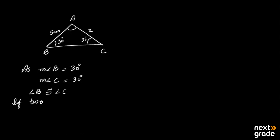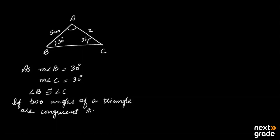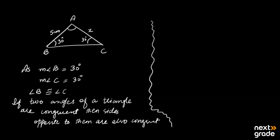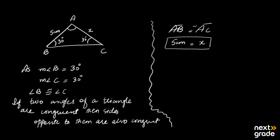Using the theorem: if two angles of our triangle are congruent, then the sides opposite to them are also congruent. So AB is congruent to AC. AB is also given in the question as equal to 5 cm, and AC is equal to x. So basically, x is equal to 5 cm.